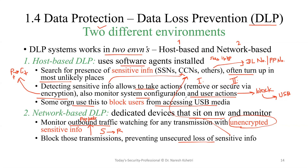In some cases, the DLP system automatically applies encryption to the sensitive content — what we call auto-encryption. Auto-encryption is commonly used on email, because several organizations' emails are victims of cyber attacks such as phishing. I hope you understand the two environments in which the DLP system, or data loss prevention system, works. Thank you for watching.